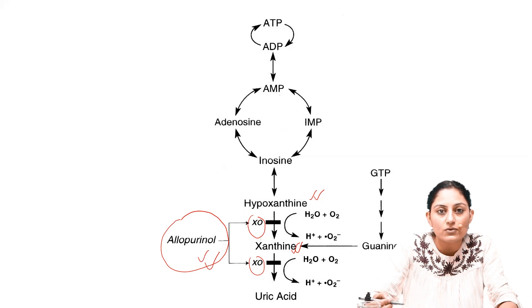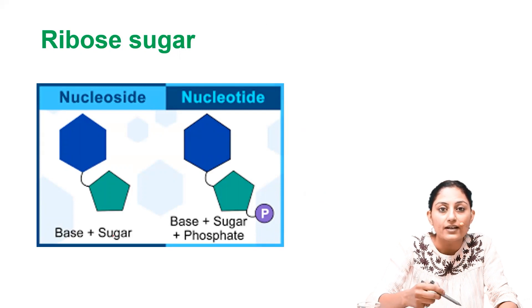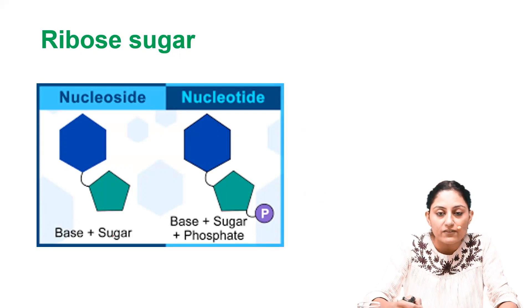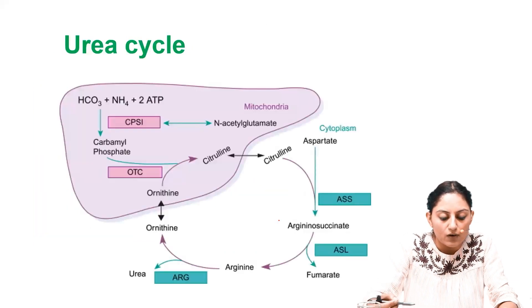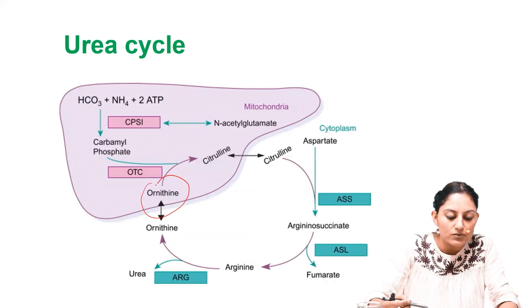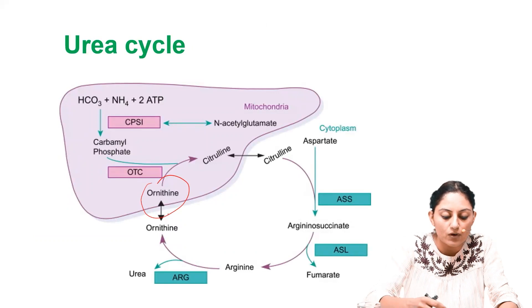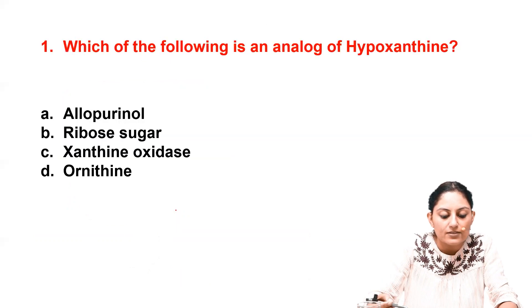The other option, ribosugar, is the pentose sugar obtained from the HMP shunt. If ribosugar combines with a base it becomes a nucleoside; combined with a base and phosphate it becomes a nucleotide. Ornithine is a component of the urea cycle — it combines with carbamoyl phosphate to give citrulline — so it is nowhere near hypoxanthine. The correct answer is allopurinol.